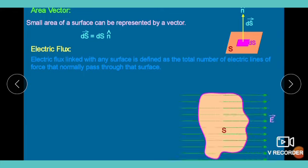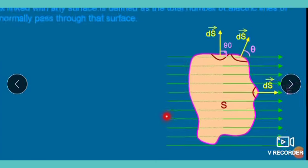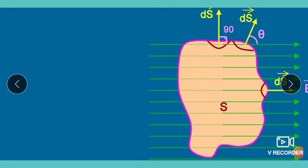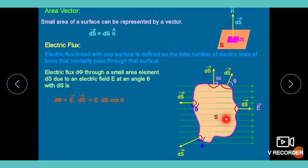Consider a surface with an electric field passing through it. We take different area elements dS₁, dS₂, dS₃, dS₄ at different positions. In all cases the area vectors point outward, but the angle between the area vector and the electric field varies — in some cases they are in the same direction, in others the angle is 90 degrees, and in others 180 degrees (exactly opposite). For such cases, the elemental electric flux is calculated as: dφ = Ē · dS̄.